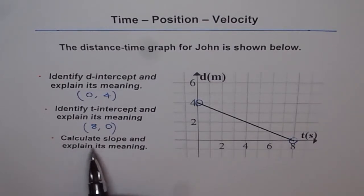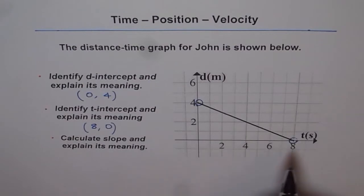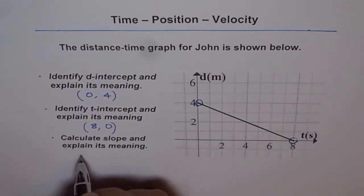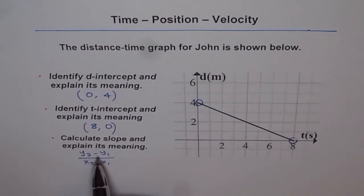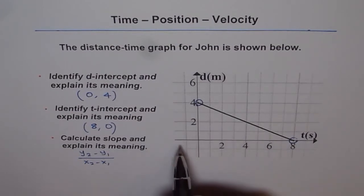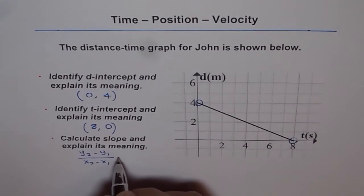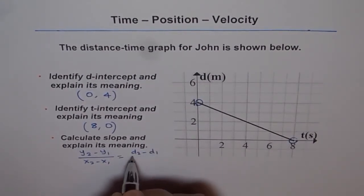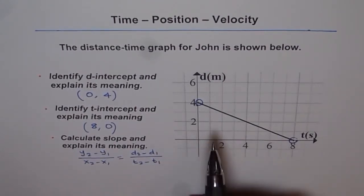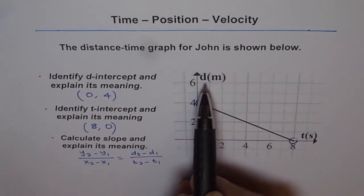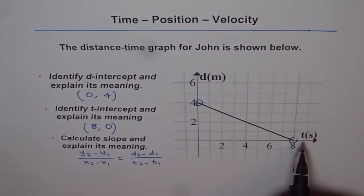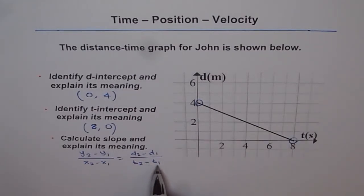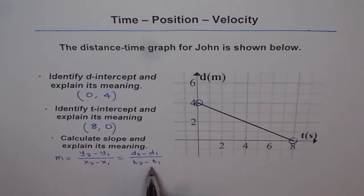The third part is: calculate slope and explain its meaning. The slope of a line is given as (y2 − y1) / (x2 − x1). In our case, since we refer to the vertical axis as d and the horizontal axis as t, it becomes (d2 − d1) / (t2 − t1). Therefore, slope m equals change in distance divided by change in time.